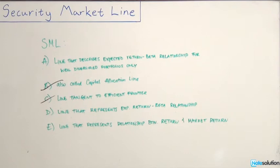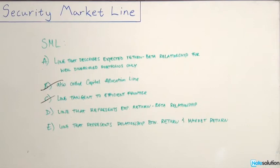Now we are left with A, D, and E. A is the expected return beta relationship for well diversified portfolios. D is the expected return beta relationship. And E is the relationship between market return and the individual security's return. They all sound somewhat correct, so let's refer back to the security market line equation to help us eliminate some of these options.